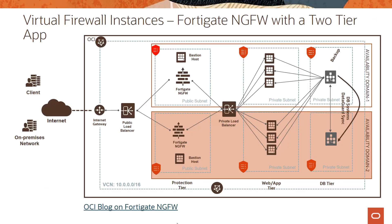Here is one — the Fortinet FortiGate next-gen virtual firewall configured with two FortiGate VM instances spread across two availability domains, enabling secure ingress and egress traffic to the OCI platform. You can deploy the solution from our marketplace as a VM and utilize security processors and threat intelligence services from FortiGuard Labs to help protect your critical business applications and deliver strong threat protection against the most advanced known or unknown threats, stopping such attacks in real time.